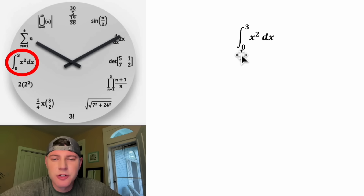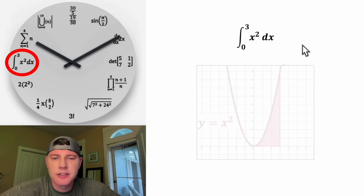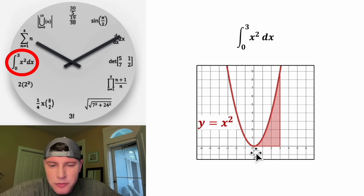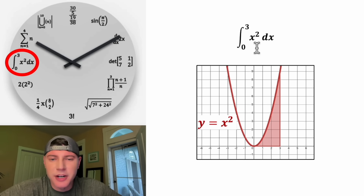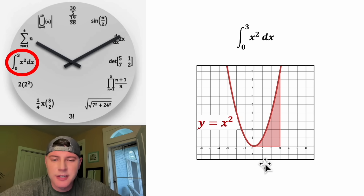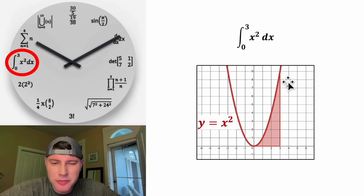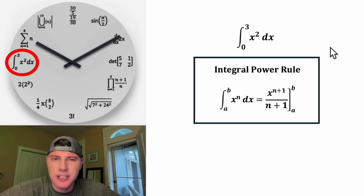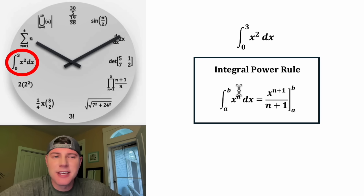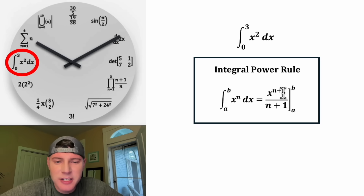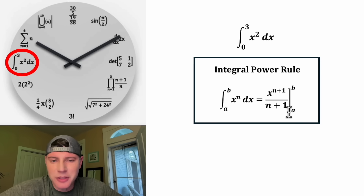Now we can go on to this one. This is the integral from 0 to 3 of x squared dx. Ultimately, if we graph y equals x squared, it wants to know the area between the curve and the x-axis between x equals 0 and x equals 3. I'm not familiar with a geometric way to find this, so let's use the integral power rule. The rule says: add one to the exponent, divide by the new exponent, and evaluate from the upper to lower bound.